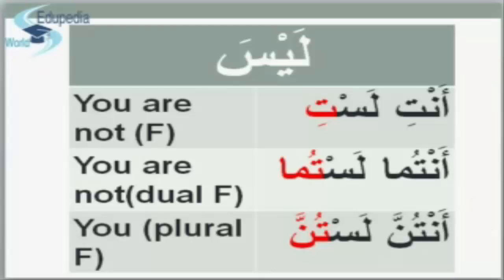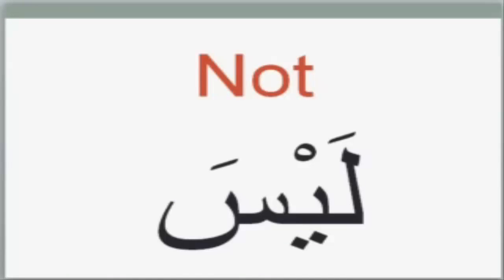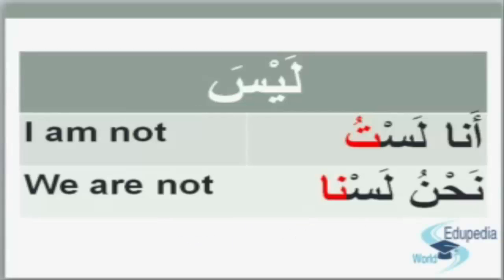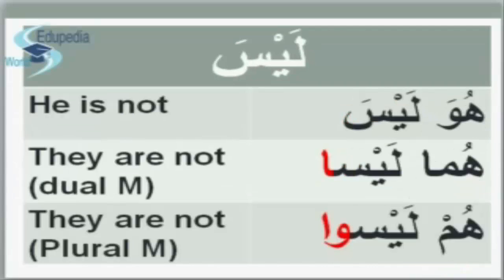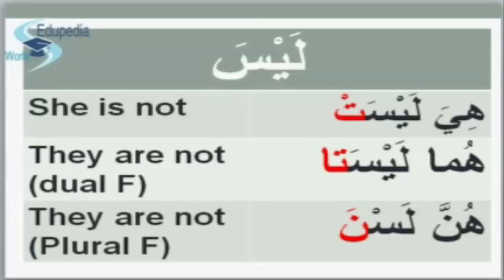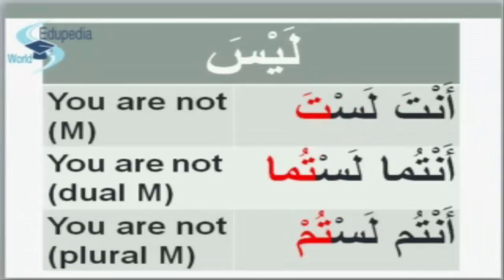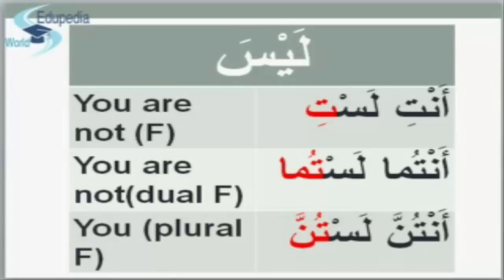Quick revision for what we have covered so far. 'Not' is ليس. أنا لستُ — I am not; نحن لسنا — we are not; هو ليس — he is not; هما ليسا — they are not, dual masculine; هم ليسوا — they are not, plural masculine; هي ليست — she is not; هما ليستا — they are not, dual feminine; هن لسن — they are not, plural feminine. أنتَ لستَ — you are not, masculine; أنتُمَا لستُمَا — you are not, dual masculine; أنتُم لستُم — you are not, plural masculine; أنتِ لستِ — you are not, singular feminine; أنتُمَا لستُمَا — you are not, dual feminine; أنتُنَّ لستُنَّ — you are not, plural feminine.